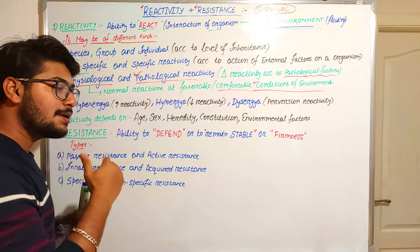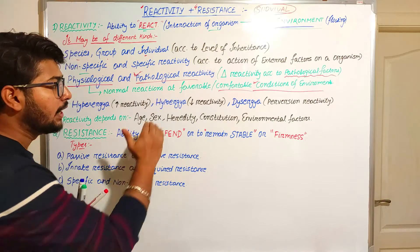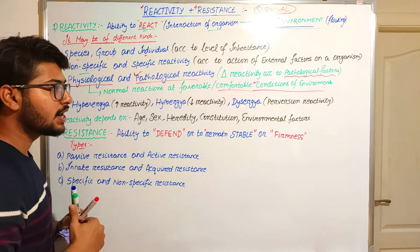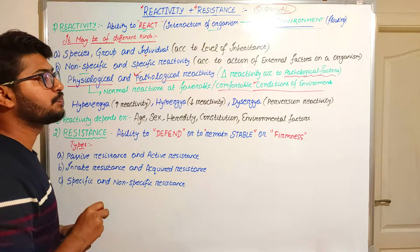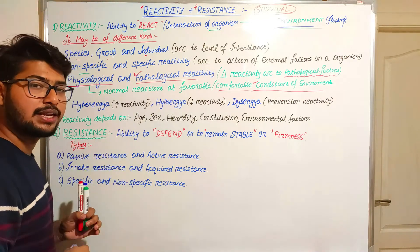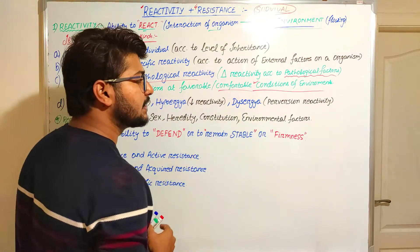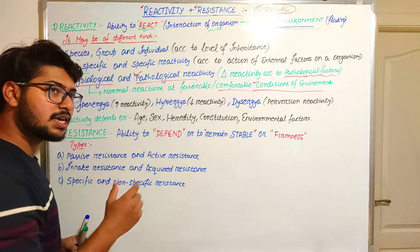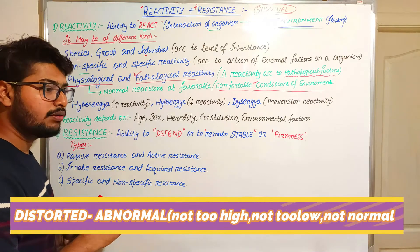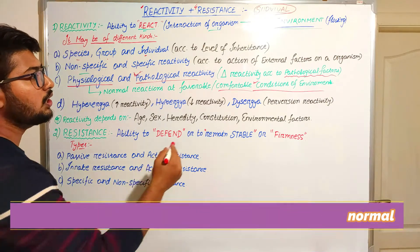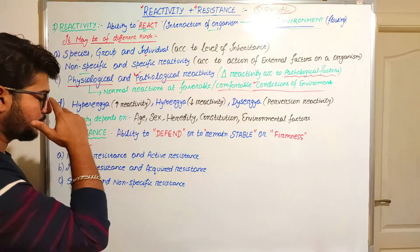According to the types of reactivity there can be hyper-reactivity — increased reactivity. There can be hypoargia — meaning less reactivity, where the organism is not very reactive to changes in environmental factors. And there is perversive reactivity, which means distorted reactivity — there will be no specific reaction to the change in external factors.